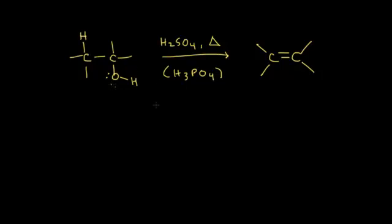Let's take a look at the general reaction for the dehydration of an alcohol to form an alkene. On the left, we have our alcohol. The carbon bonded to the OH is our alpha carbon, and the carbon bonded to that is our beta carbon. This mechanism requires a beta hydrogen. You also need sulfuric acid and heat. Phosphoric acid can also be used. On the right, we've lost our OH as water, and a double bond forms between the alpha and beta carbons.